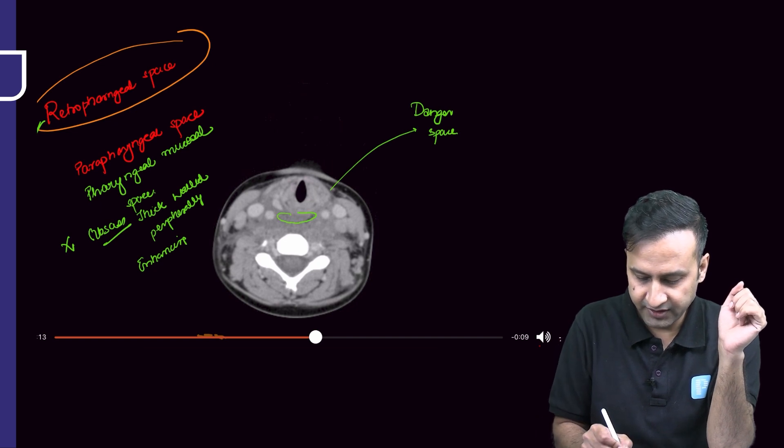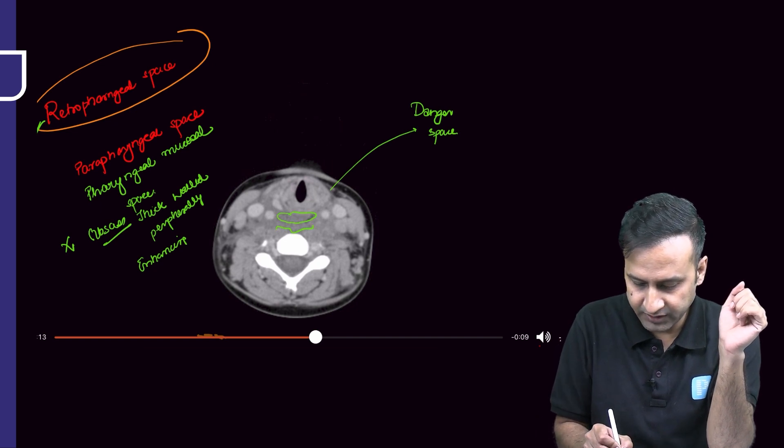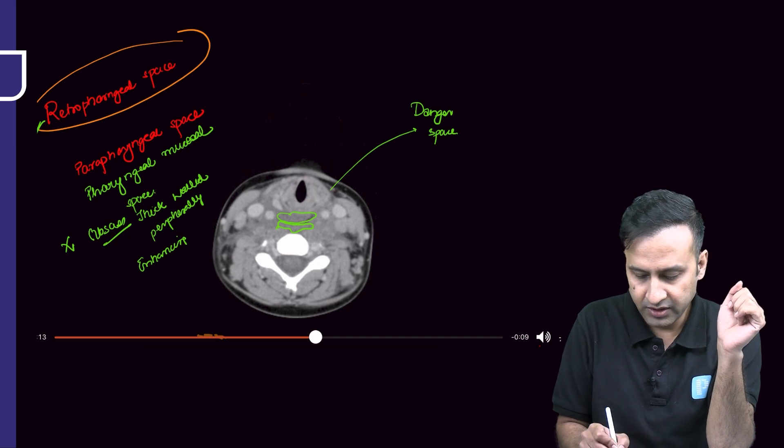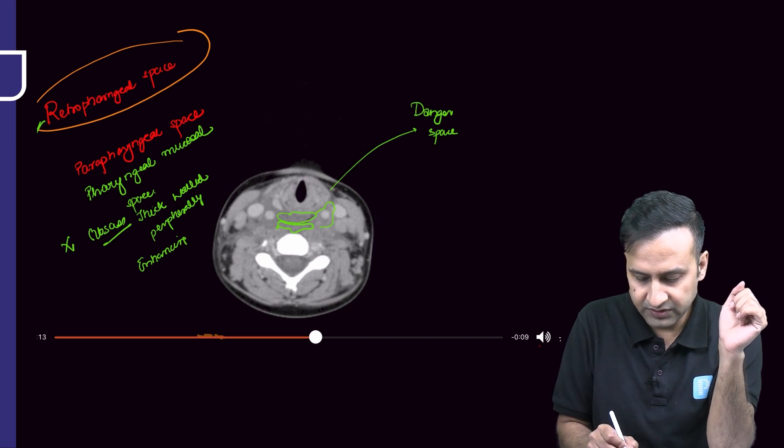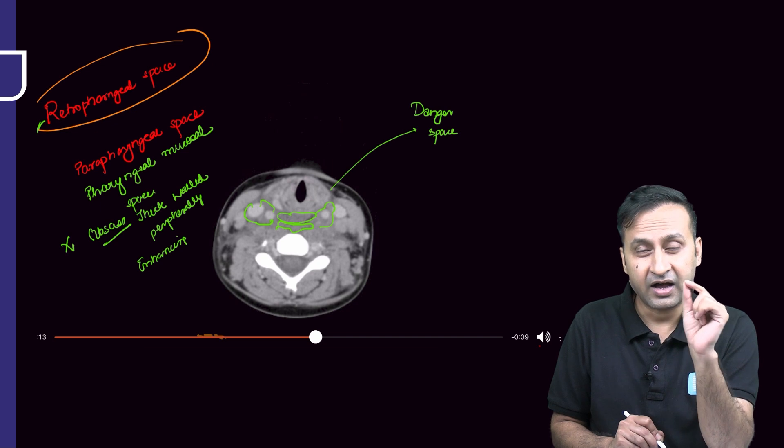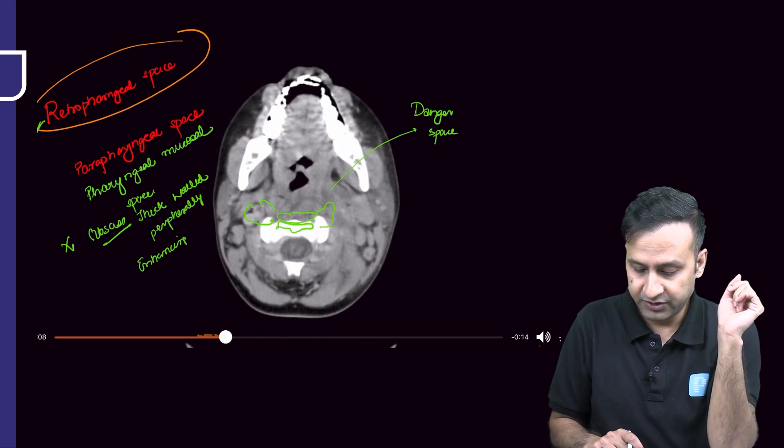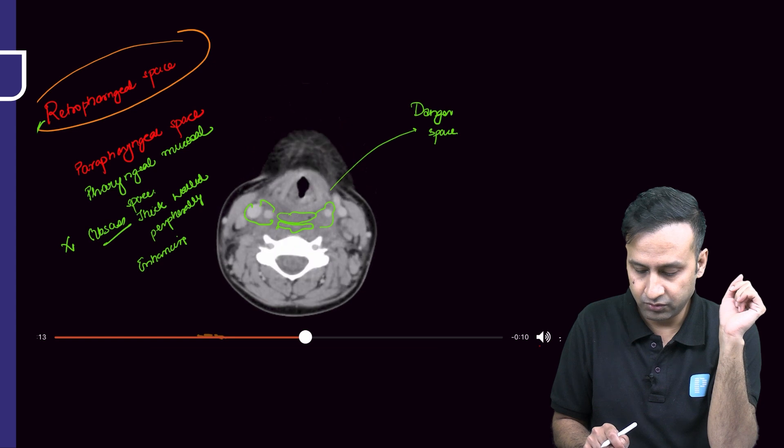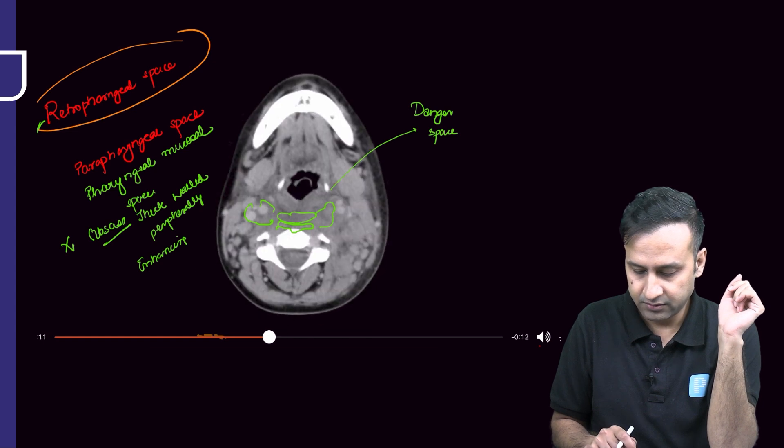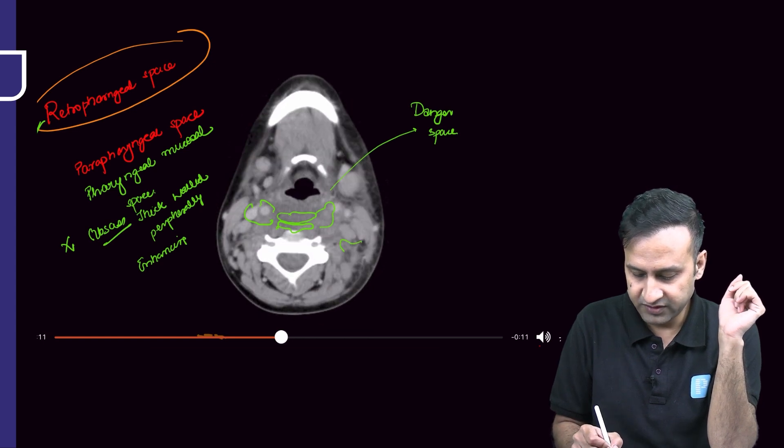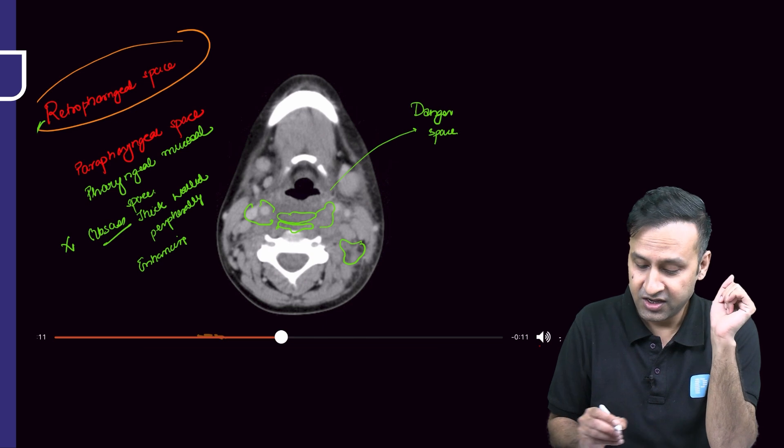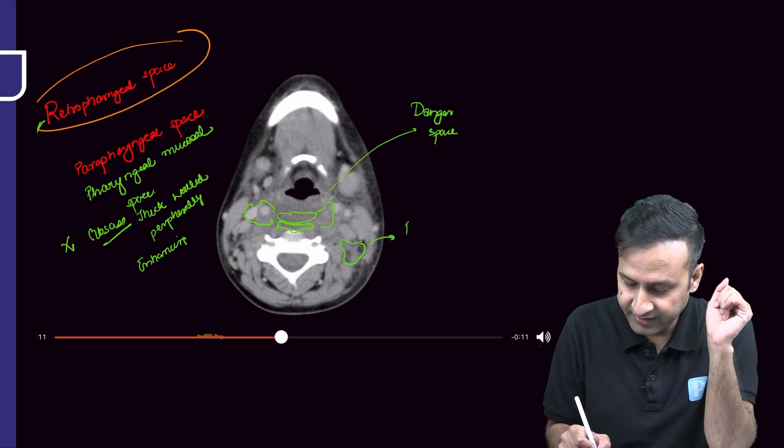When I'm going inferiorly, specifically at this level, obviously this is the retropharyngeal area, but I can see some soft tissue edema posterior to the retropharyngeal area also. In fact, I can see some soft tissue encasing the carotid space also, so it means there is a high likelihood of danger space involvement. What is this particular space? This is the other important infrahyoid neck space: the posterior cervical space.